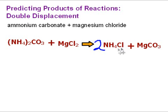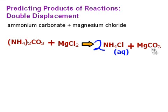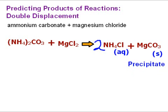Let's find ammonium chloride. Almost all ammonium compounds are soluble, and most chlorides are soluble — in this case, this compound is soluble, so we write 'aq' by that. The other one, magnesium carbonate: look at the rule about carbonates, and we'll see that if it's not with a group one metal, then that compound is not soluble.